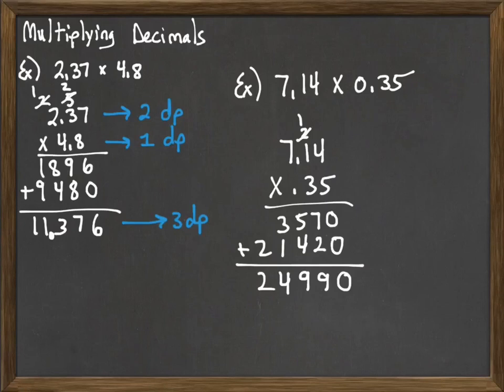And then because we had 2 places in the first one, 2 places in the second one, that gives us 4 total decimal places. Our answer should have 4 decimal places. So we mark it with 4 places.